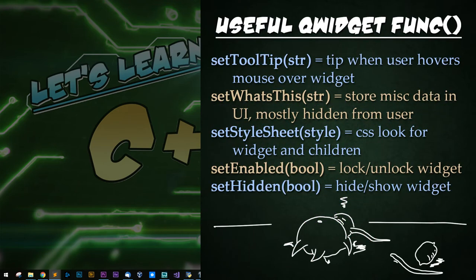Now here are some important widget functions. Set tooltip: shows a tooltip when the user mouses over a widget. Set what is this: here you can place miscellaneous data, mostly hidden from the user but still a part of the UI. I've used it to store weird ID numbers and strings. Some applications and even dialogues will have a little question mark in the top right next to your close button — if you click that on some object, it will bring up that what's this info.